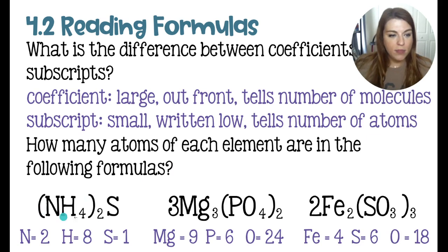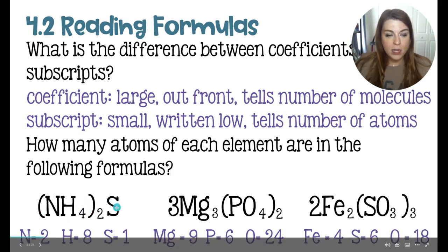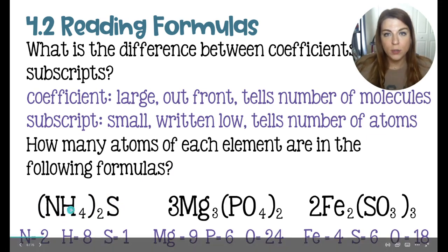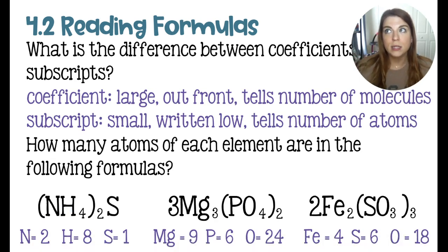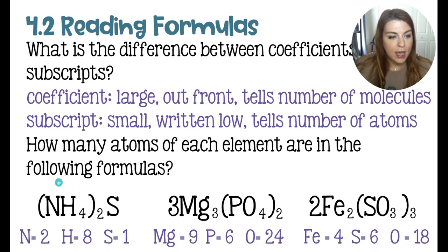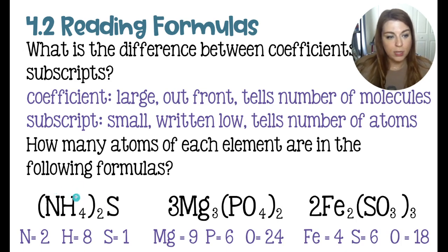Looking at ammonium sulfide — the only time you're going to have an ionic compound without a metal is NH₄, the ammonium ion, which has a plus one charge. In this formula, the parentheses mean I have two of everything inside them, giving me two nitrogens. Two times four gives me eight hydrogens, and there's no subscript behind the sulfur, so it only has one atom.